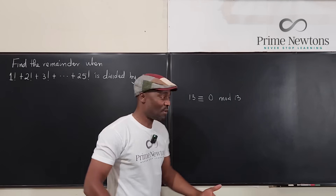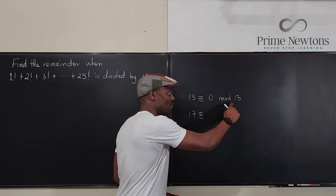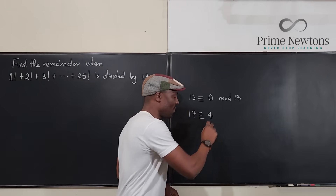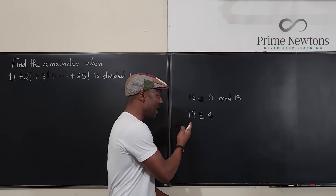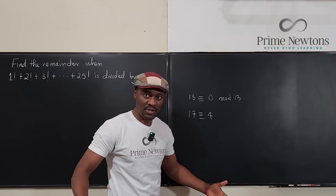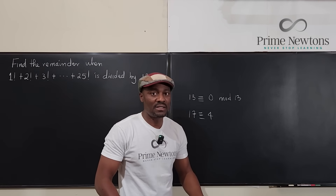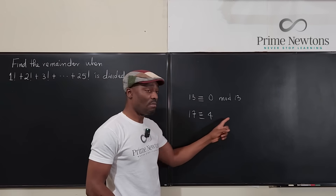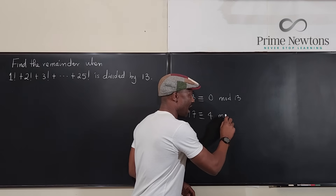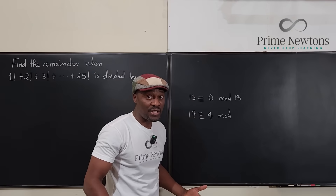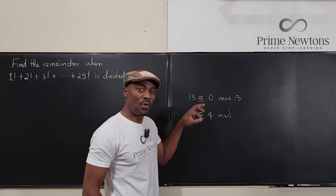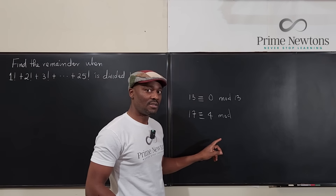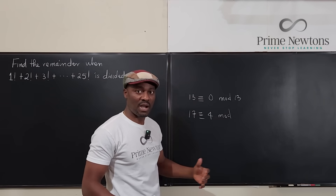If I want to write 17 mod 13, I don't have to write 17 — all I have to write is 4, because that's the remainder. There are many numbers that share the same property; we're talking about equivalence classes. So if I write 4 mod 13, I'm referring to 17, or to 30, because 30 is 4 more than a multiple of 13 — specifically 30 minus 26 is 4, since 26 is divisible by 13.